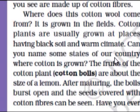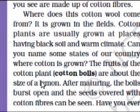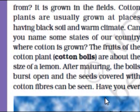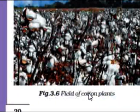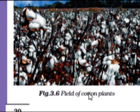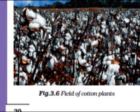Can you name some states where cotton is grown? The fruits of the cotton plant, or cotton bolls, are about the size of a lemon. After maturing, the bolls burst open and the seeds covered with cotton fibers can be seen. This is a cotton plant - you can observe a field of cotton plants with cotton bolls containing fine strands of fibers.